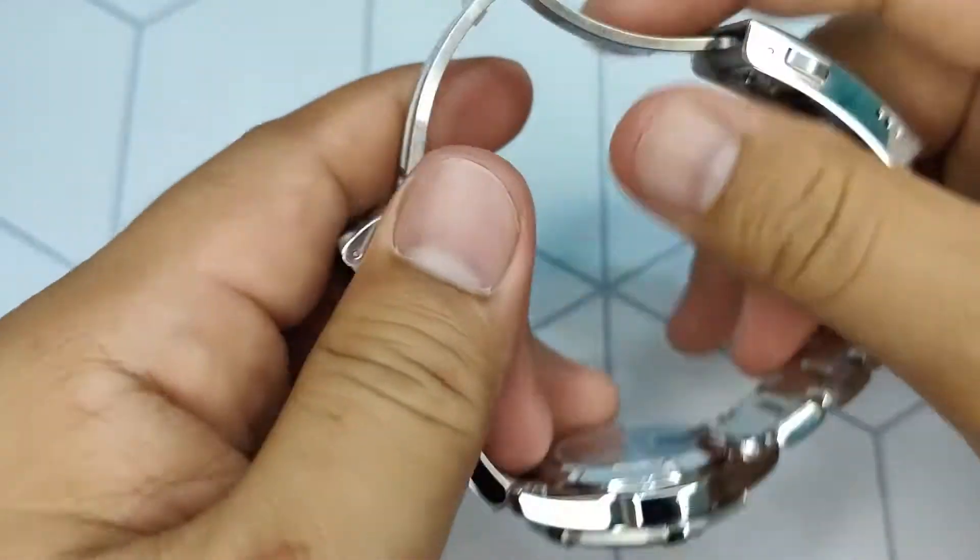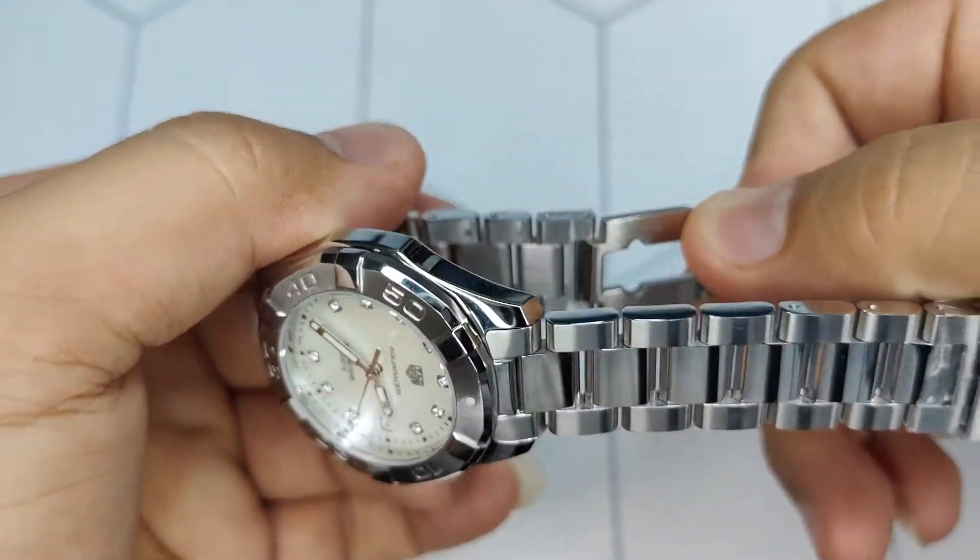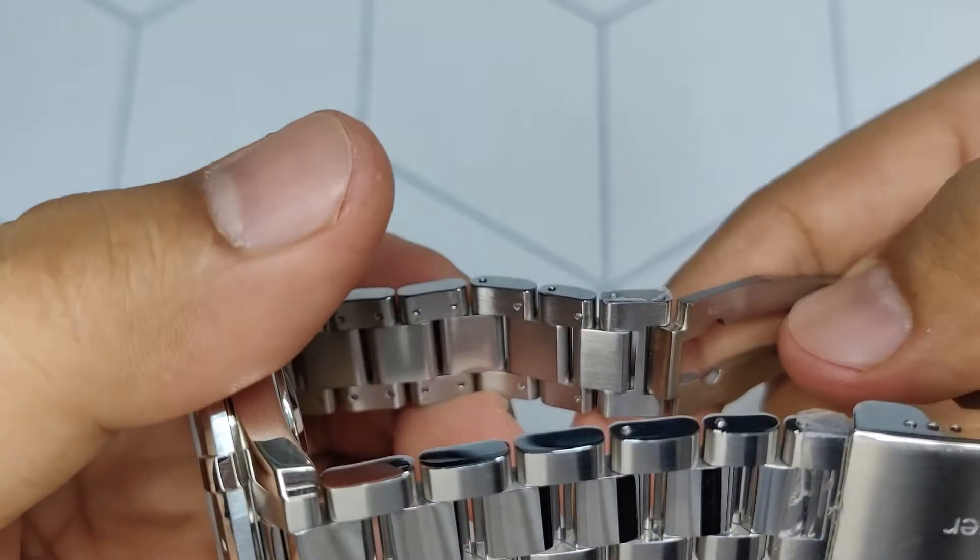Some watches have arrows. If yours have arrows, then just remove the pin going that direction.